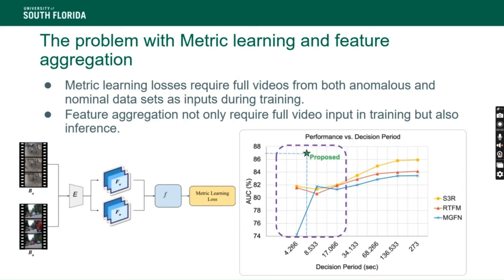Feature aggregation also requires the full length of a video to be input at once, so it can separate anomalous features from nominal features and refine them to be more distinct. These two requirements — metric learning losses and full-video feature aggregation — prevent end-to-end training.